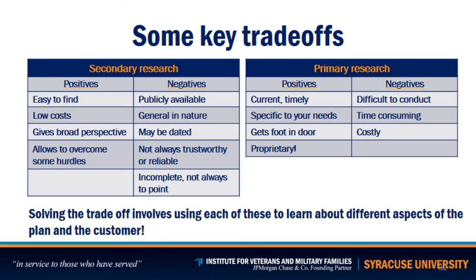Key trade-offs: secondary research is easy to find, low cost, gives broad perspective, and allows you to overcome some hard hurdles. However, it's publicly available to anybody, generally in nature, may be dated, not always trustworthy or reliable, and often incomplete. Primary research is current, timely, specific to your needs, gets you a foot in the door, and is proprietary — data only you have. The negatives are that it's difficult to conduct, time-consuming, and often costly.